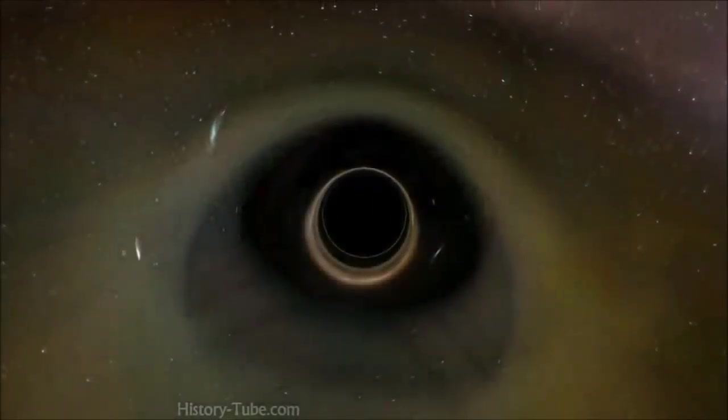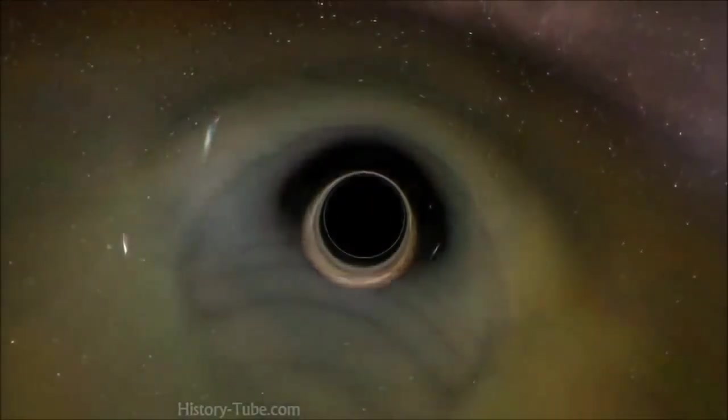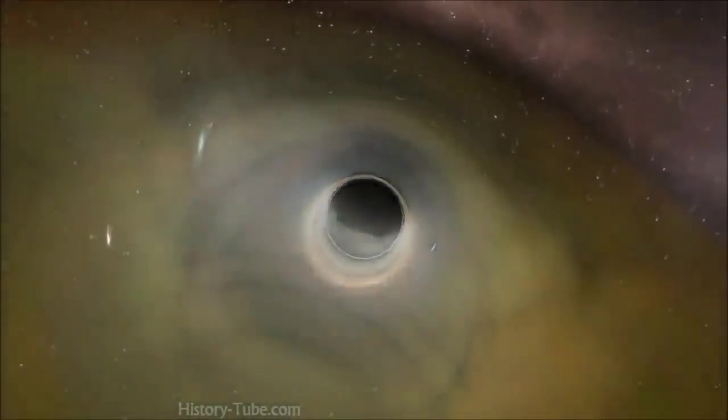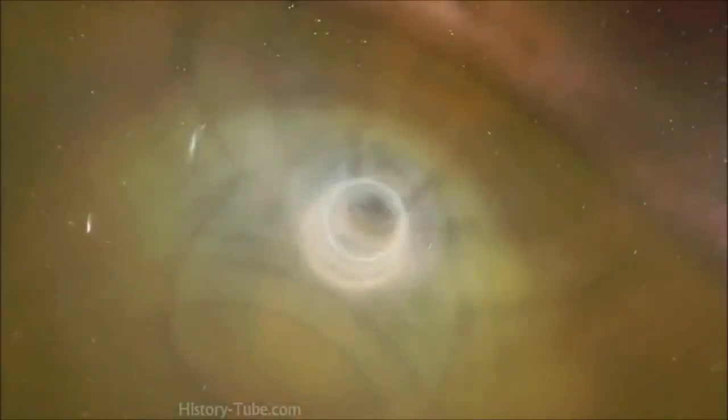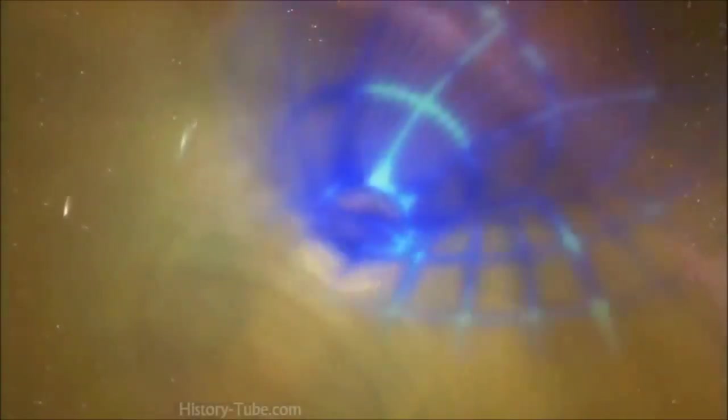Black holes are collapsed stars, massive objects crushed to a fraction of their original size. Gravity around them is so strong that, according to Einstein's math, a spinning black hole can literally drag space along with it, twisting it like an actual piece of cloth.